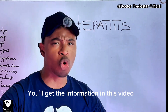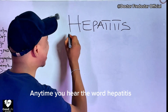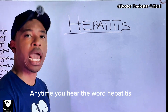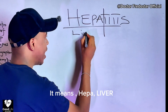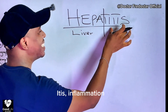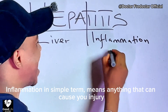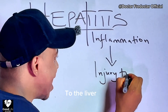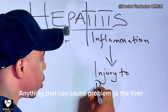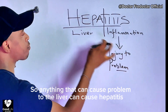Let's start now. What is hepatitis? Anytime you hear this word hepatitis, it means 'hepa' — hepa means liver. Inflammation — inflammation means anything that can cause injury to the liver, anything that can cause problem to the liver.